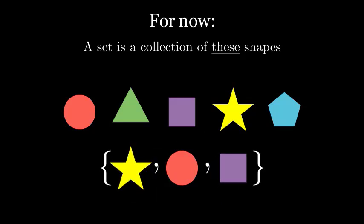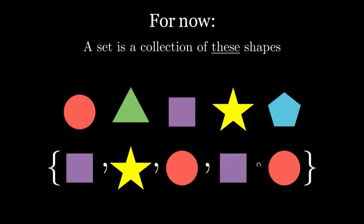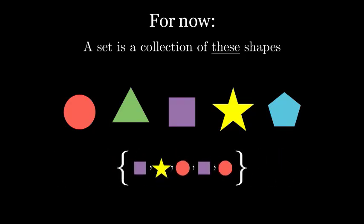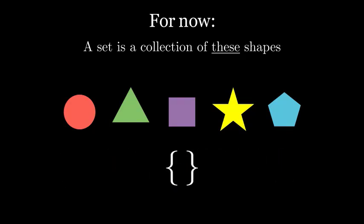If we list the same element more than once, that's the same thing as listing it just once. Something is either in the set, or it is not. It can't be in the set multiple times. So this set could also be written like this. We could denote the set with nothing in it as just a pair of curly braces with nothing between them, but we often instead write it as the circle with a bar through it. We call it the empty set.